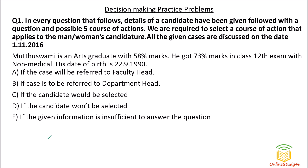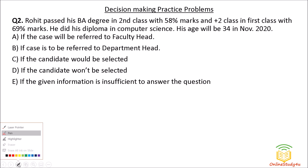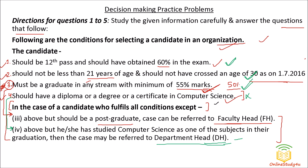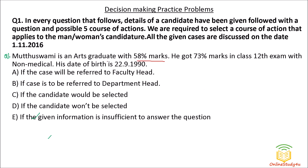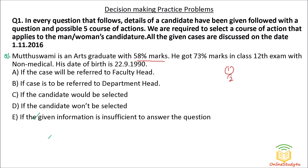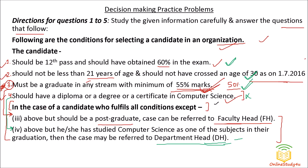Question number one: Muthu Swami is an arts graduate with 58 percent marks. Must be a graduate in any stream — arts, science, or commerce — with minimum 55 percent marks. He has 58 percent, so condition three is satisfied. We have four conditions total: one, two, three, four. He is satisfying condition three — a graduate in arts with 58 percent.